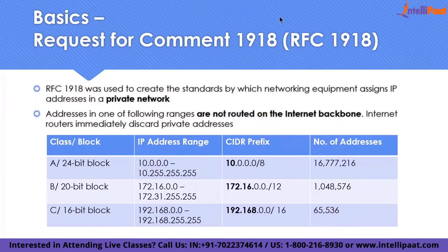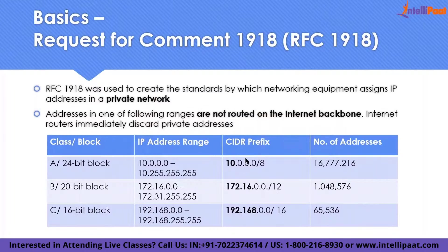There's a standard called RFC 1918. In simple terms, you have three classes: Class A, Class B, and Class C. You would have read these things in your networking class during engineering. Class A is your 10-dot address space, meaning the first 8 bits are fixed by the network and the remaining 24 bits you can use for IP addresses.